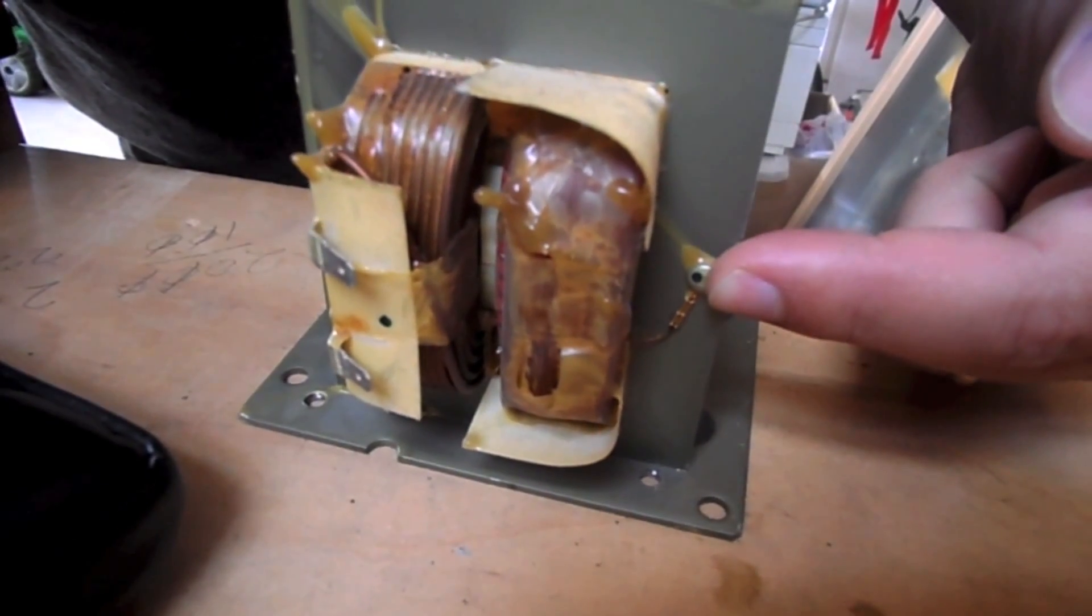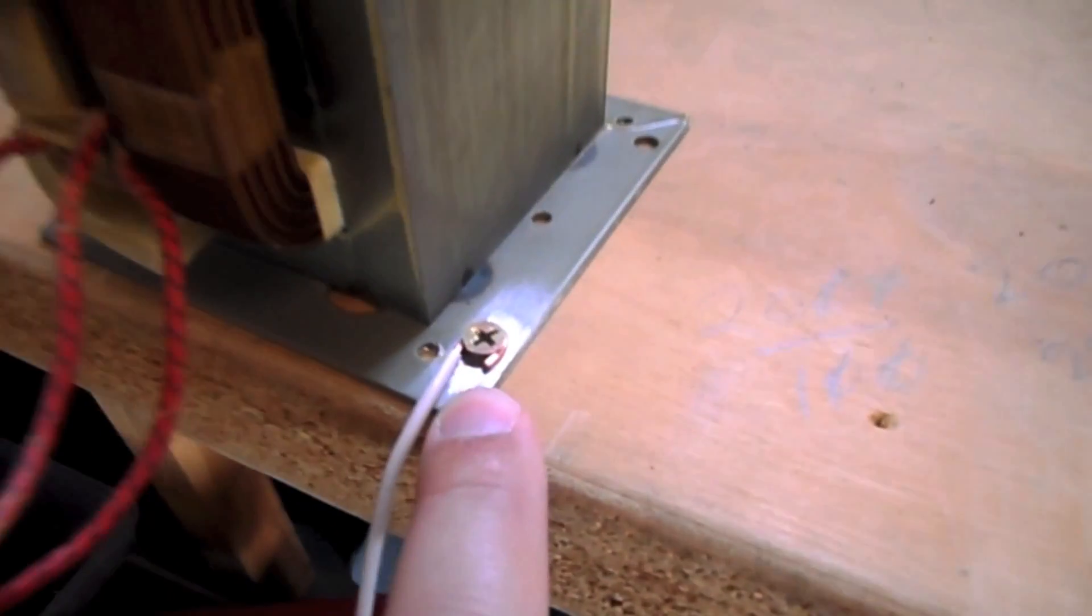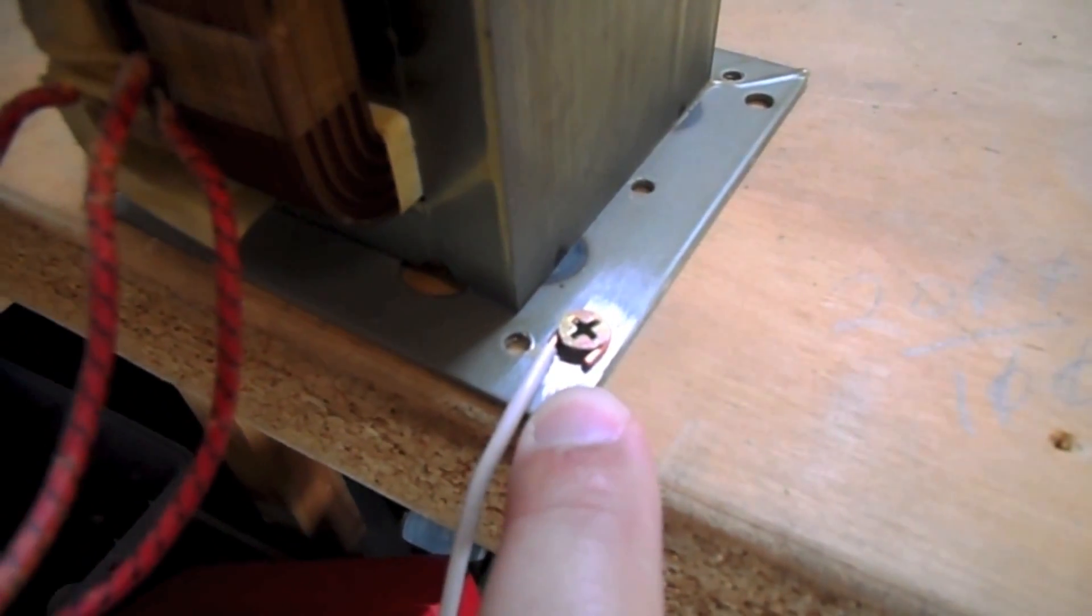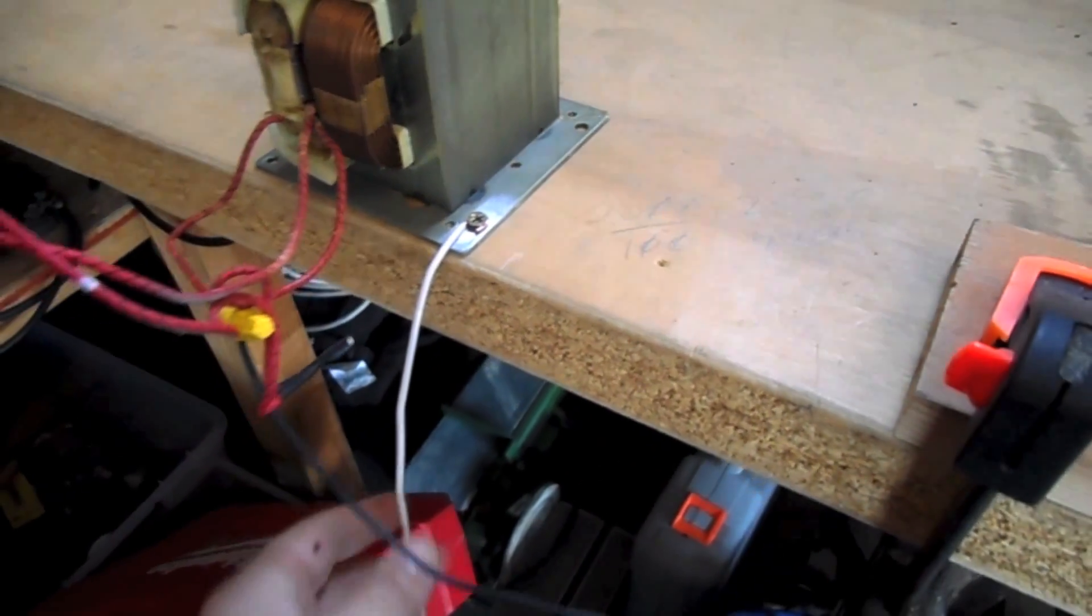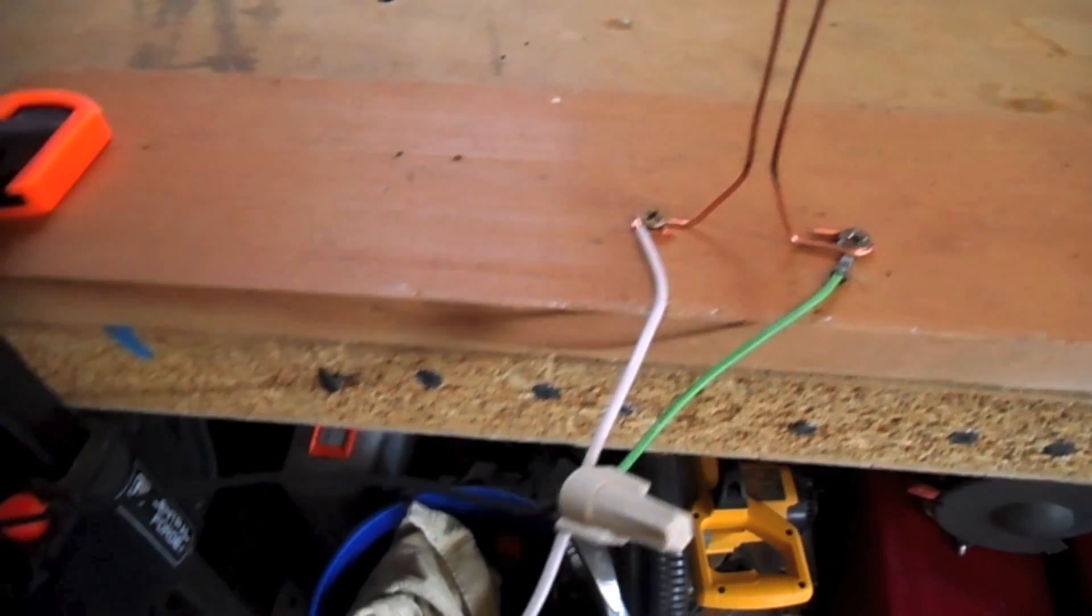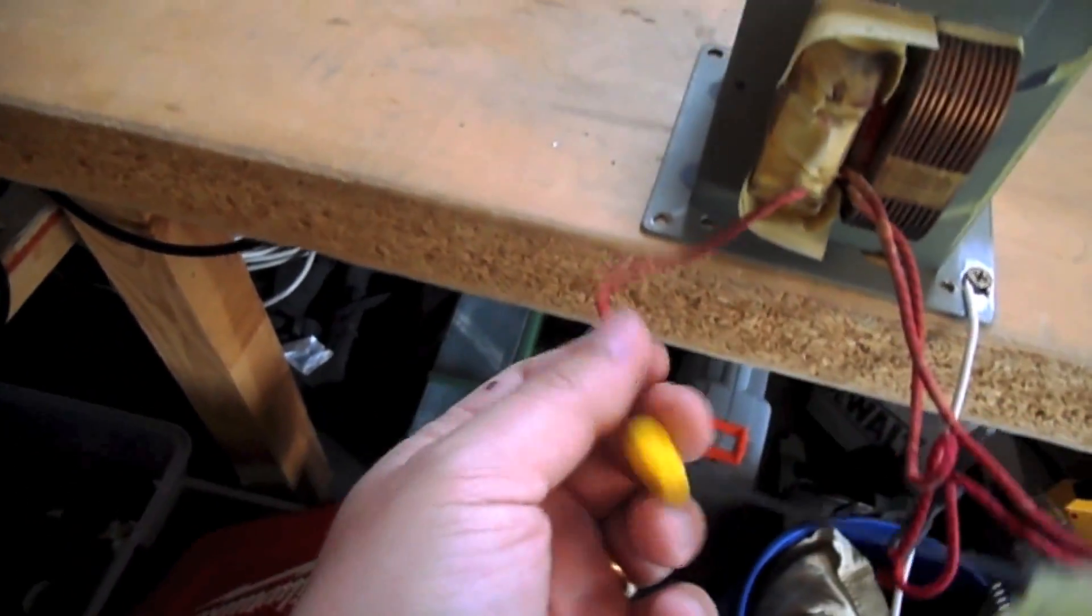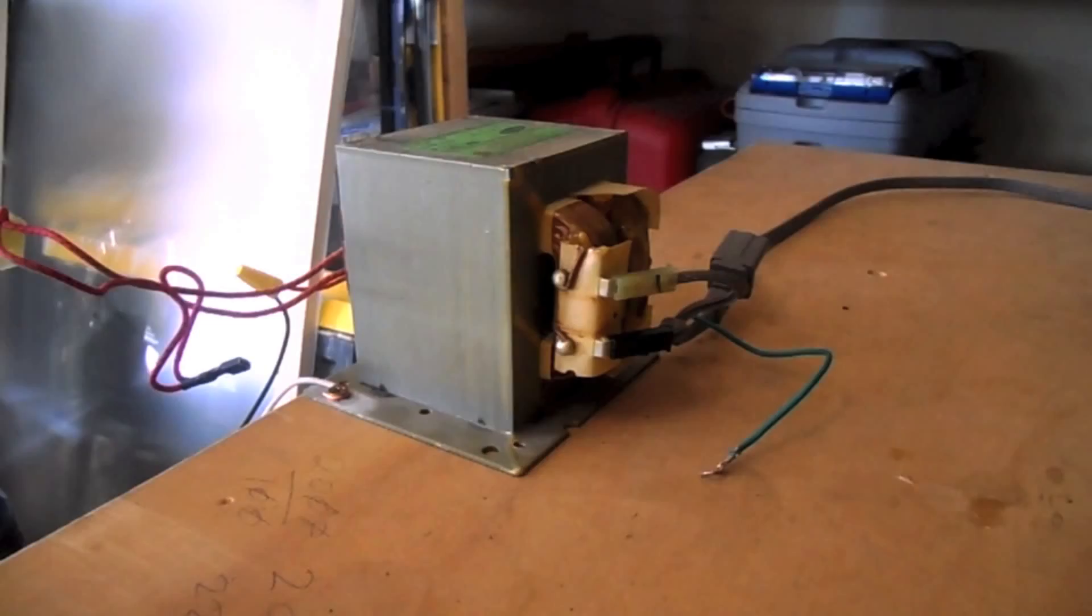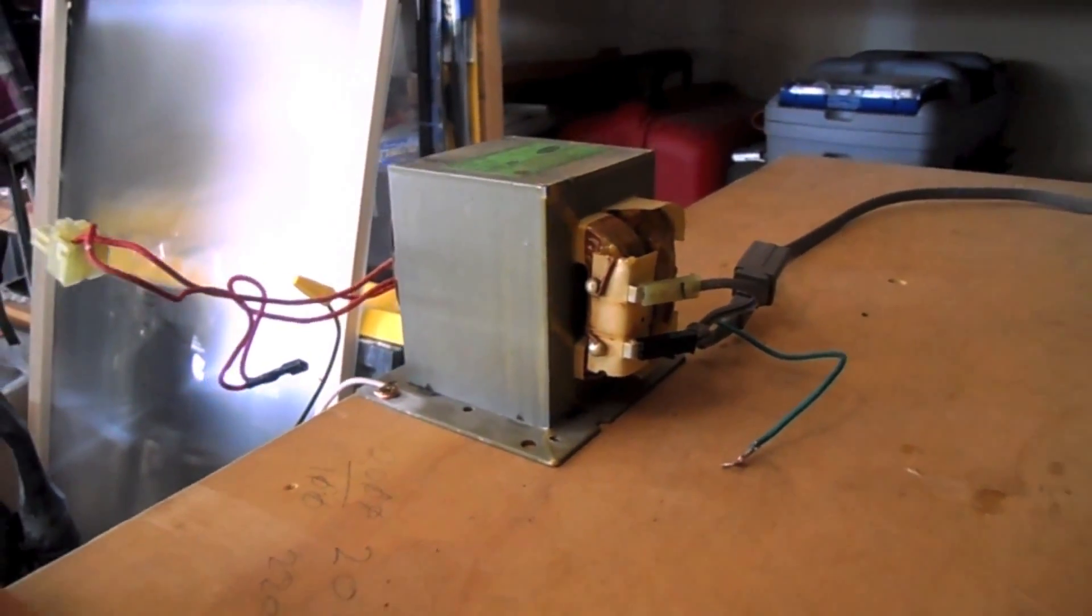So to power your Jacob's ladder, connect one wire to the body of the transformer and run it to one side of the Jacob's ladder. Connect the other side to the loose wire coming from the secondary winding of the transformer. When you're ready to try it out, connect the power cord from the wall to the primary winding of the transformer.